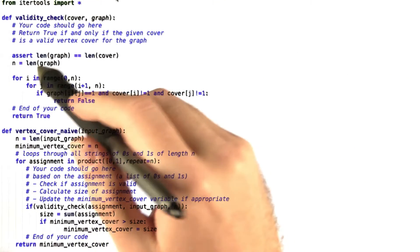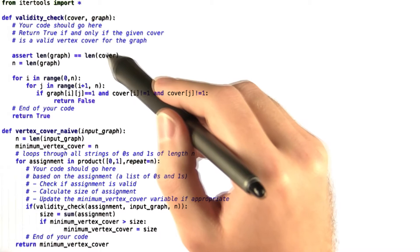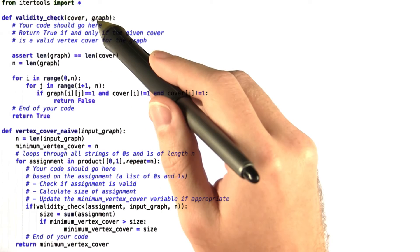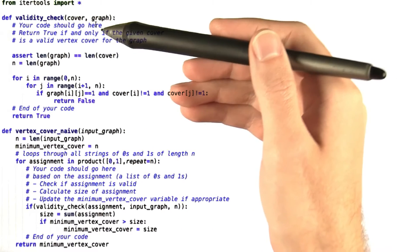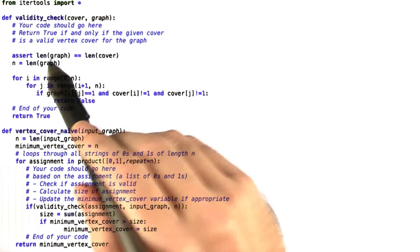Let's take a look at my solution. The first thing I do is assert that the length of the graph is equal to the length of the cover, since we need the same number of nodes or vertices in both the cover and the graph. We set n equal to the length of the graph.